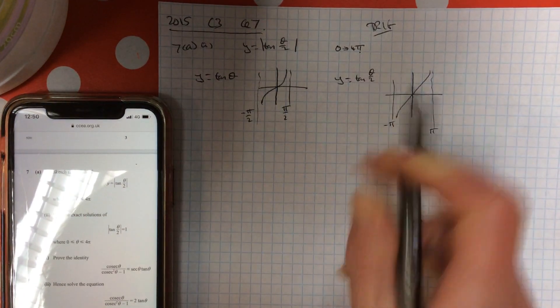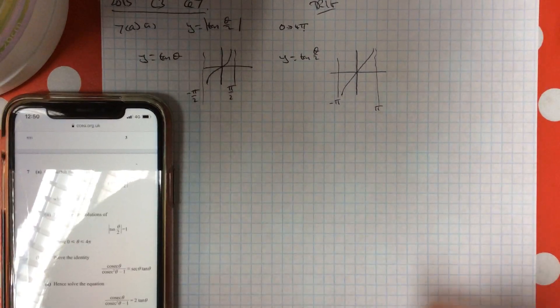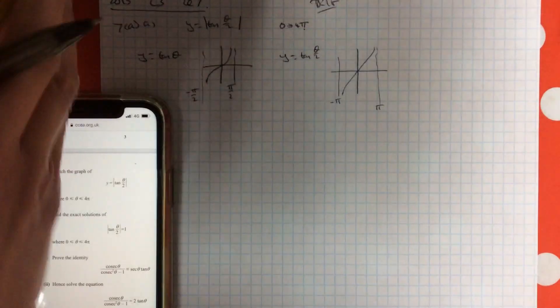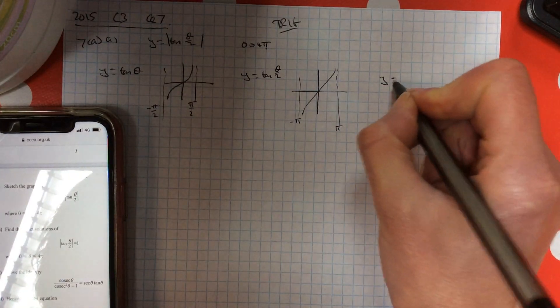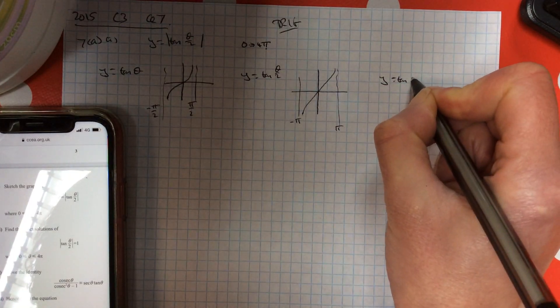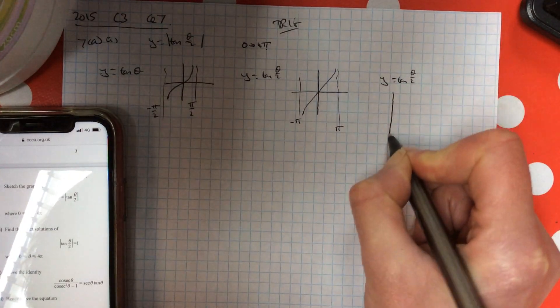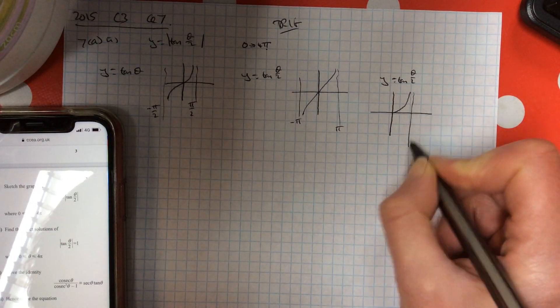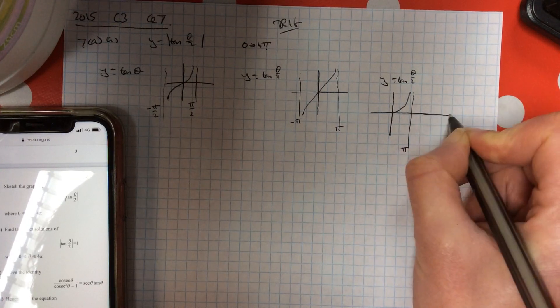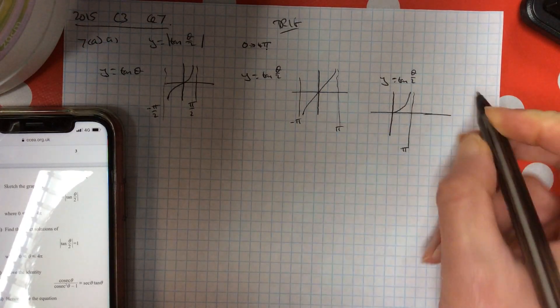I'm going to extend that up to 4 pi. So if I take my graph I have here, so y equals tan theta over 2. I don't need before 0, so we can leave it off. That's pi.